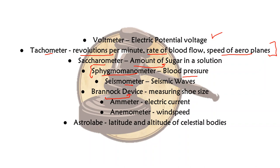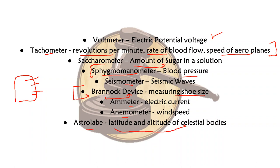Next time you go footwear shopping, remember the Brannock device. Ammeter measures electric current. Anemometer measures wind speed. And astrolabe measures the latitude and altitude of a celestial body.